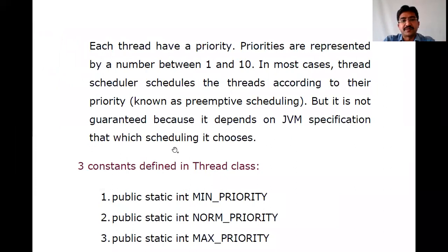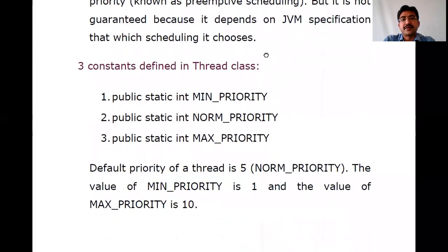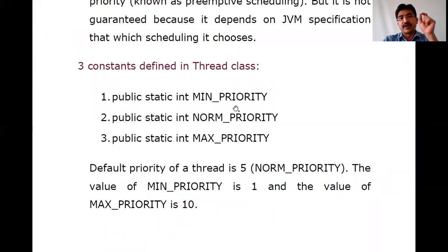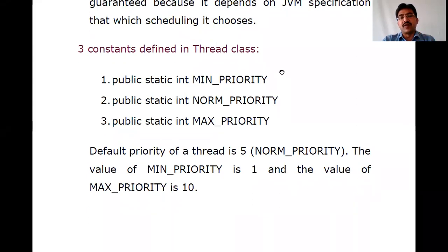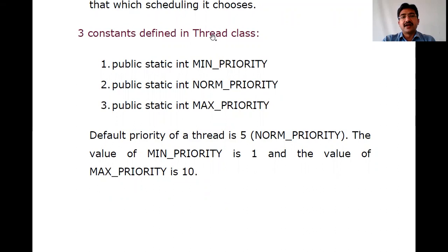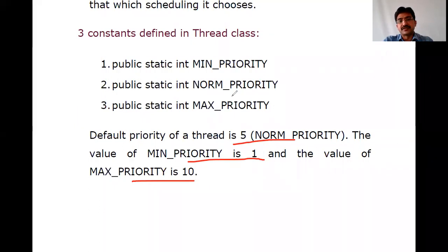We have three constants defined in the Thread class. One is MIN_PRIORITY, second is NORM_PRIORITY, and third is MAX_PRIORITY. All are defined as public static int. The minimum priority value is 1, normal priority is 5, and maximum priority is 10. By default, the thread priority is 5, which is NORM_PRIORITY.